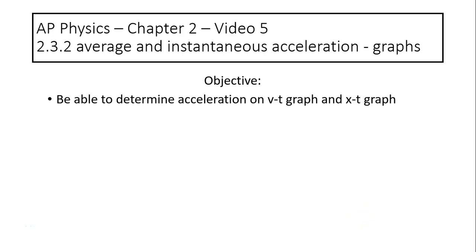Hi, this is Mrs. LaBarbara. This is AP Physics, Chapter 2, Video 5. Today's topic is average and instantaneous acceleration graphs. The objective for today is to be able to determine acceleration on a VT graph and XT graph.